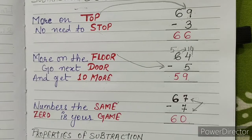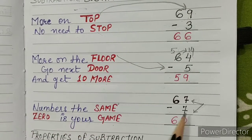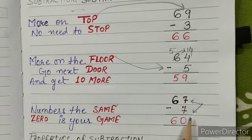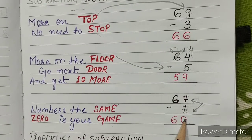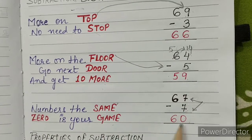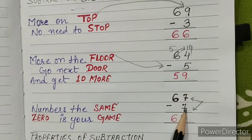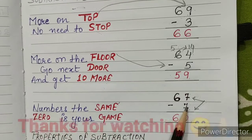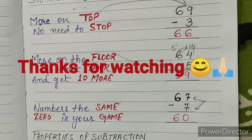Rule 3: Numbers the same, zero is your game. When both numbers are the same, like 7 and 7, the result is 0. For example, in 67 minus 7, the ones place has 7 minus 7 which equals 0, giving us 60 as the answer.